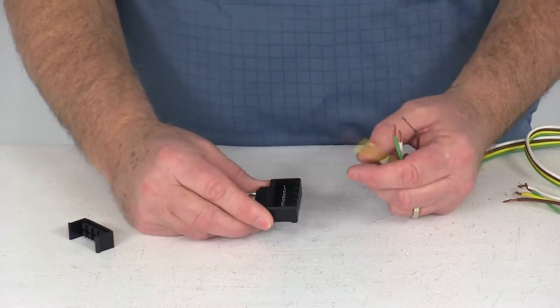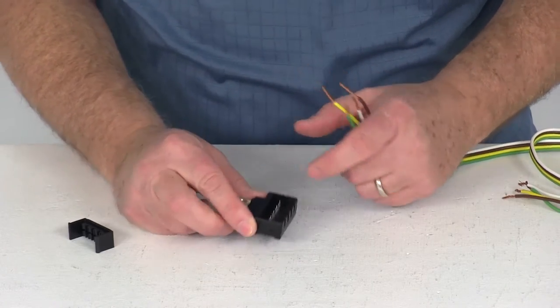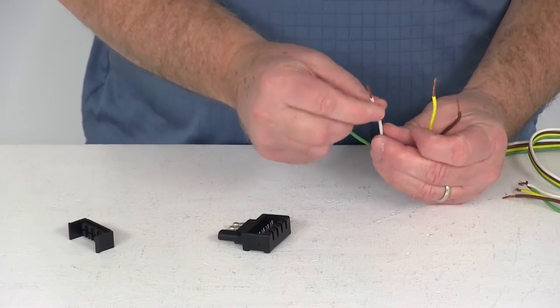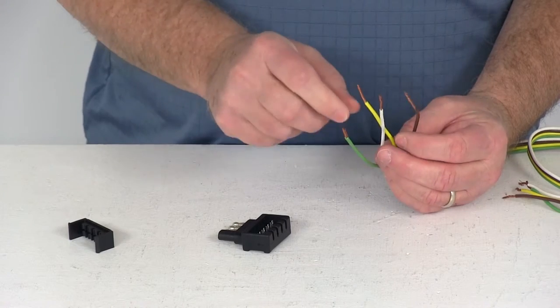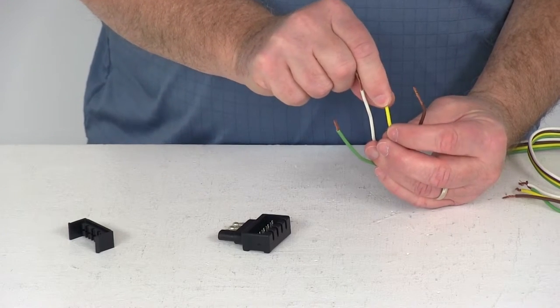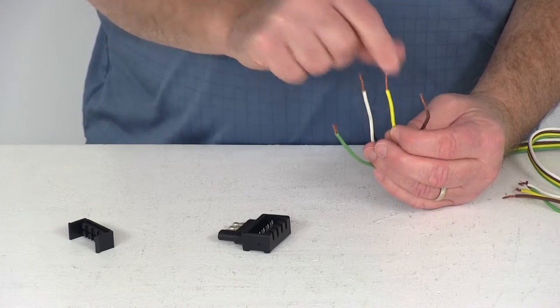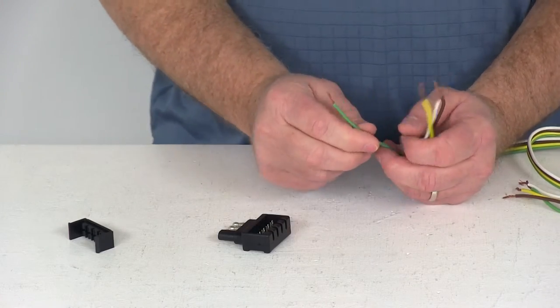All you'd do is, like in this case it says right turn, so your green. Your white is the ground, brown is the taillights, your yellow is your left turn and left brake and turn signal, and your green is your right turn and brake signal.